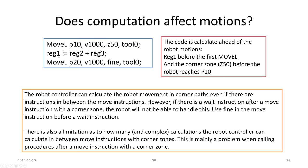What happens is that the code is calculated ahead of the motions. That calculation here, register 1, is done before the first MoveL. Things are going ahead and the robot is moving after things are done. And the corner zone Z50 before the robot reaches P10. The robot controller can calculate the robot movement in corner paths, even if there are instructions in between move instructions.